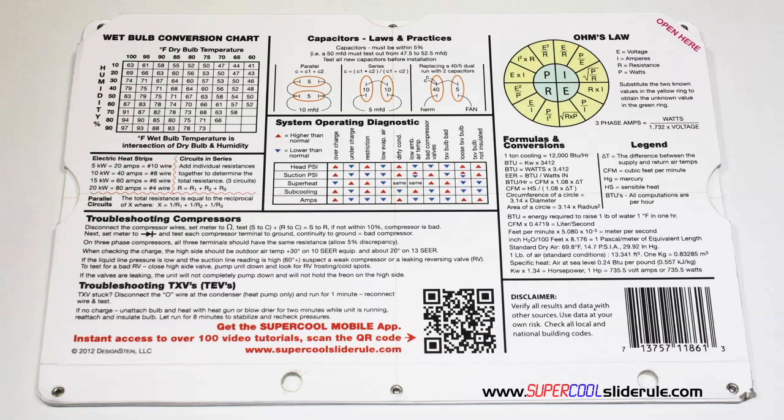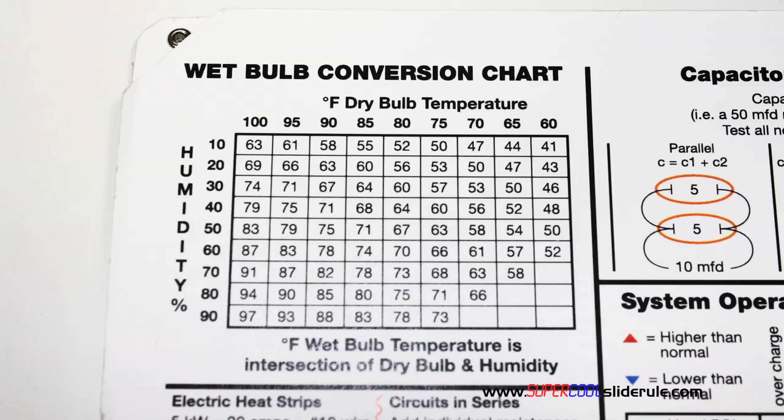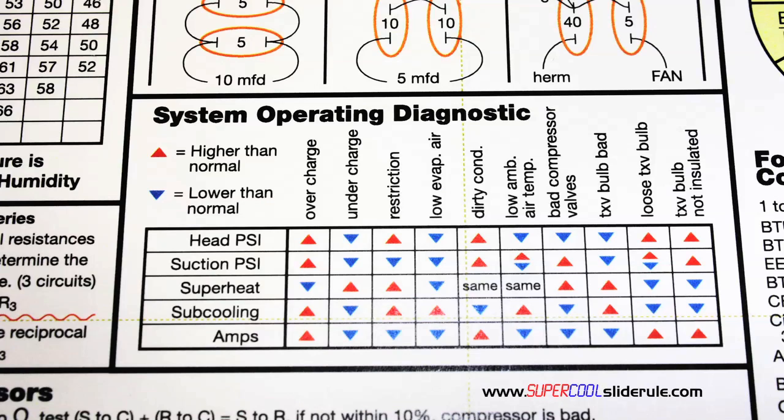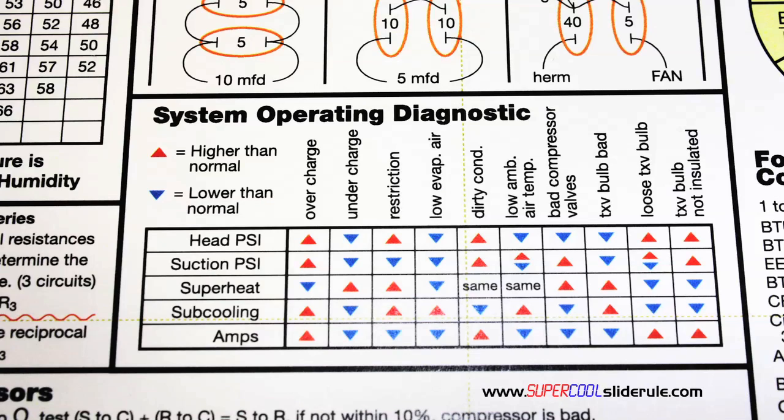it has capacitor rules and practices, a wet bulb conversion chart, how to perform computations on series or parallel circuits, an electric heat strip guide, a complete system troubleshooting diagnostic chart, and how to troubleshoot compressors and TXVs.